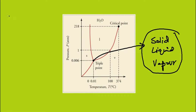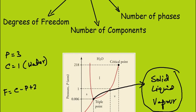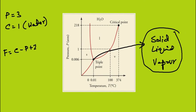At the triple point, the number of phases equals 3. The number of components is 1 because we are only dealing with water. So if I calculate the degrees of freedom using the phase rule: F equals C minus P plus 2, the number of degrees of freedom equals 1 minus 3 plus 2.